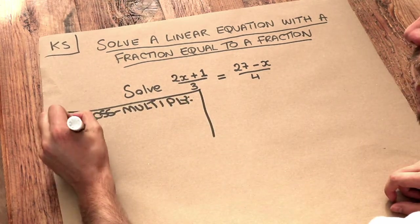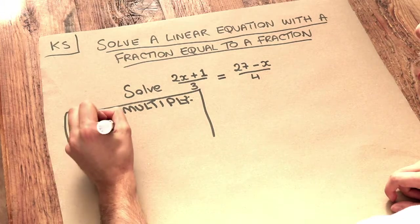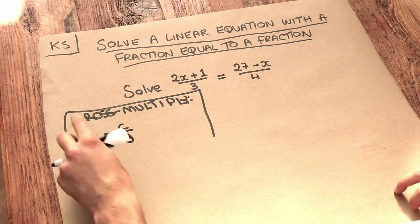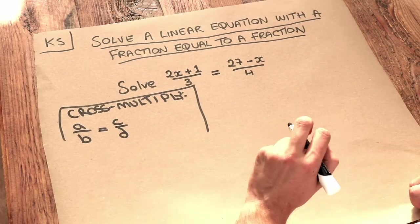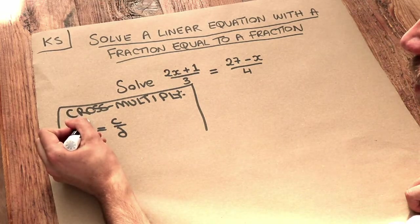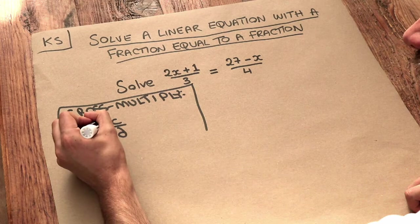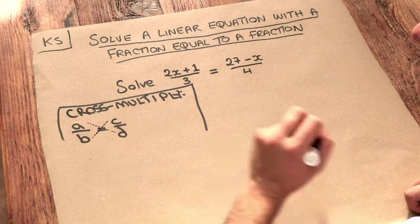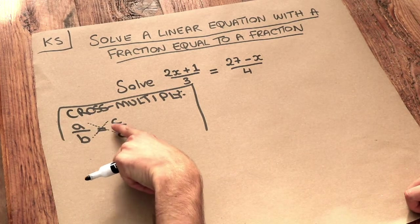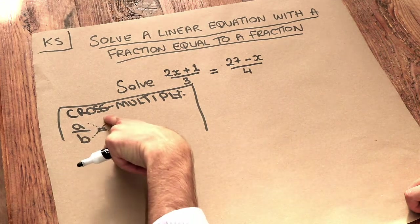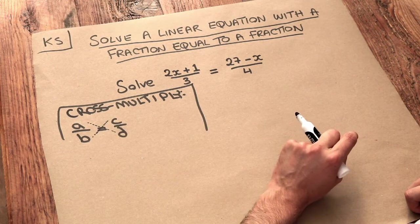If we have a fraction equal to another fraction, a over b equals c over d, then we can multiply diagonally. So a times d is equal to c times b. Can you see we're multiplying in a cross? There's a cross shape in the middle, hence why it's called cross multiplying.